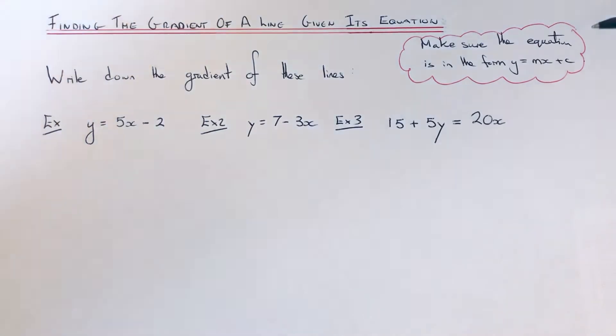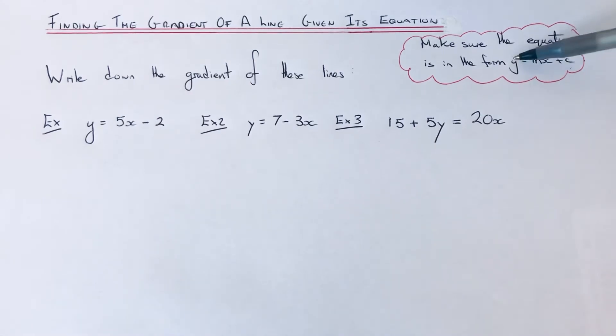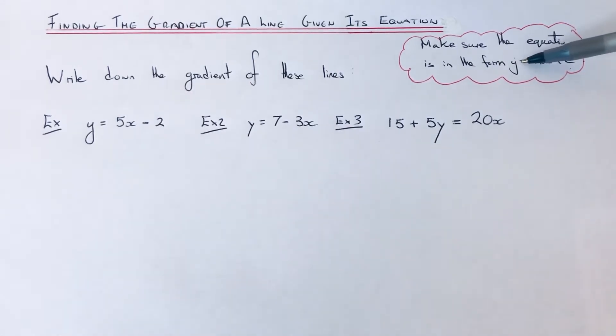To do this, first of all you need to make sure that the equation is in the form of y equals mx plus c, so y needs to be the subject of the formula. And then to get the gradient, which you use the symbol m for, it's the number before x, so it's the coefficient of x.